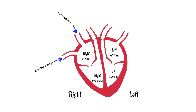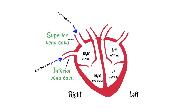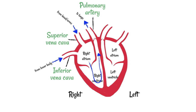Blood is going to enter the heart from the body, and it's going to do it in the right atrium. At that top vessel there, it enters from the head and arms, and at the lower one it comes from the lower body. This is the superior vena cava and the inferior vena cava. In some diagrams it simplifies this and just shows one vessel and labels it as the vena cava. Blood goes through the right atrium, through the right ventricle, and then out towards the lungs through a vessel called the pulmonary artery.